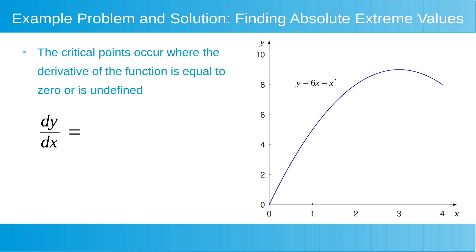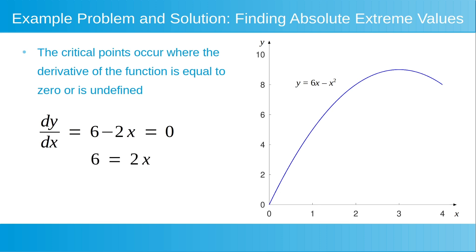Looking at our function y is equal to 6x minus x squared, the derivative of 6x with respect to x is 6, and the derivative of minus x squared with respect to x is minus 2x. So f'(x) = 6 − 2x. To find the points where the derivative is equal to zero, we set the derivative equal to zero and solve for x. Moving 2x to the other side, we get 6 is equal to 2x, or 2x is equal to 6. Dividing both sides by 2, we get x is equal to 3.